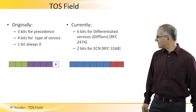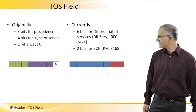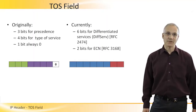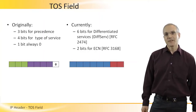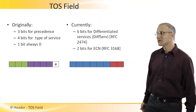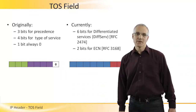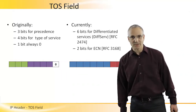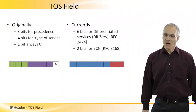Originally, the Type of Service field was divided into three bits of precedence, four bits for type of service, and one bit which was default set to zero. The idea of the field was to be able to differentiate between different ways of handling packets in the network, so each packet can belong to some class.